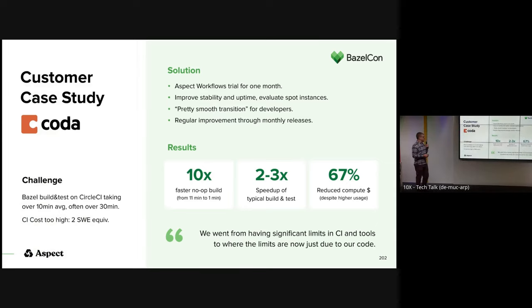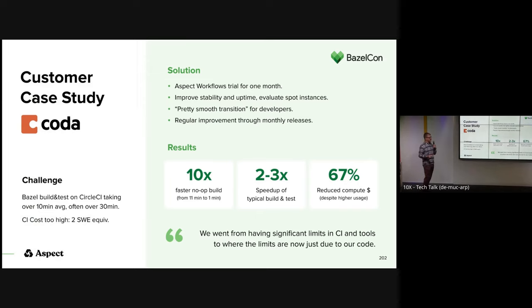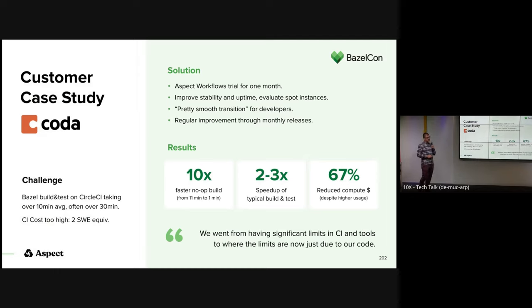Putting it all together, we did a comprehensive case study at Coda. Originally they were spending about 10 minutes on average and sometimes over 30 minutes on their 99th percentile builds, and the cost was the equivalent of two software engineers they could have hired if they reduced the cost of running on CI. We did our one-month trial, proved it had good stability and uptime, and the results we got — not making it up — are exactly the ones from the Bazel 1.0 blog post. We went from 11 minutes to one minute: a 10x speedup, as promised. We had a 2 to 3x speedup of their typical builds and tests. They also reduced their compute spend 67 percent, even though they were adding more and more targets to their Bazel build and increasing usage during that period. They said: 'We went from having significant limits in CI and tools to where the limits are now just in our code.' The infrastructure layer is not their problem anymore.